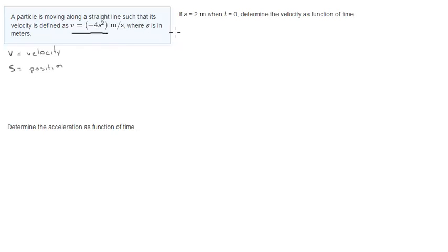This is simple if you know how to approach this problem. So basically what we're going to do, we start with negative 4s squared. We know that v is ds/dt, which is how the position changes over time.